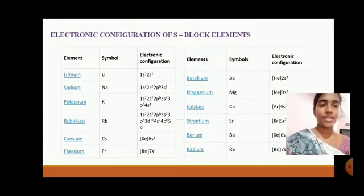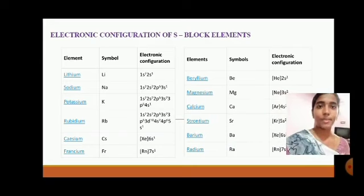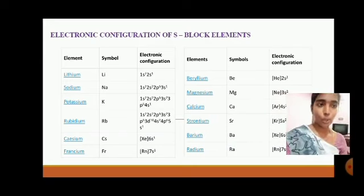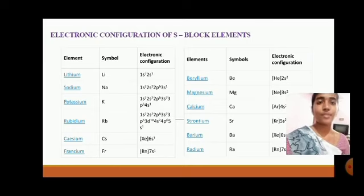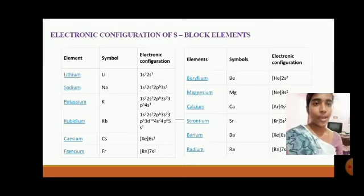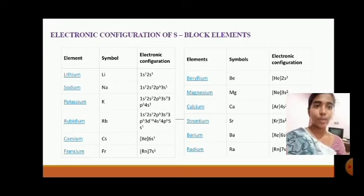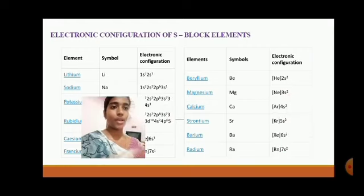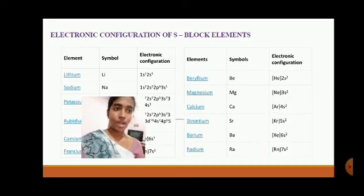The electronic configuration of s-block elements: examples include lithium, sodium, potassium, and rubidium. For example, lithium's electronic configuration is 1s²2s¹. Beryllium and magnesium also belong to the s-block elements.